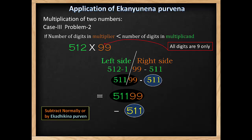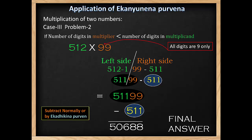You can subtract normally or by the Ekadhikena method, and you will get the answer 50688. This will be our final answer.